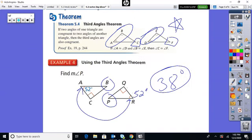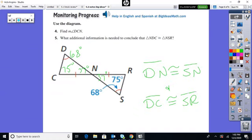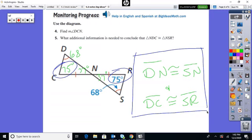Alright. Pause it. Try the monitoring progress question. And we'll wrap it up for today, my friends. Alright. Welcome back. Hopefully you got a little something like this. For number four, angle DCN, D to C to N would be 75 degrees. Same as R. Find the missing angle in the middle, 37, by subtracting them off from 180. And what additional information would we need to conclude? Well, we've got all the angles congruent now. So we would need all the sides congruent. They gave us one pair. But they didn't give us any other information. So we would need to know that DN was the same as SN, and we would need to know that DC was the same as RS.